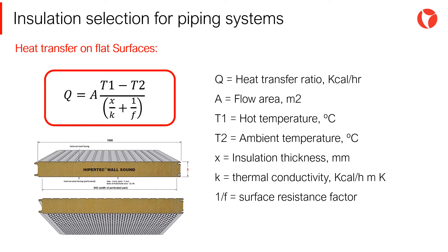For flat surfaces, the heat transfer from the surface to the environment can be expressed as shown on the screen. Where Q is the heat transfer rate, A is the flow area, T1 is the hot temperature, T2 is the ambient temperature, X is the insulation thickness, K is the thermal conductivity, and 1/F is the surface resistance factor. It can be concluded that the greater the thickness of the insulation, the lower the heat transfer rate — in other words, the greater the thickness, the more efficient the insulation.